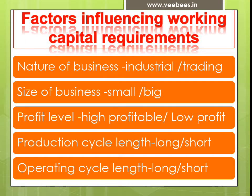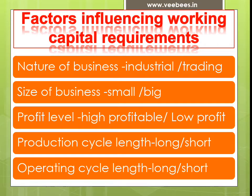The first factor is nature of business. A financial manager has to consider whether his firm is an industrial concern or a trading concern. An industrial concern will require more amount of working capital because he has to invest working capital in raw material, work in progress, finished goods, etc. A trading concern has no production process — he purchases finished goods for the purpose of sales as and when required, so he has to keep a lesser amount of stock. Thus, a trading concern requires lesser working capital.